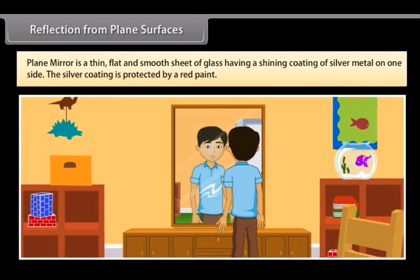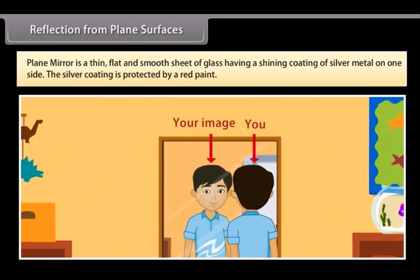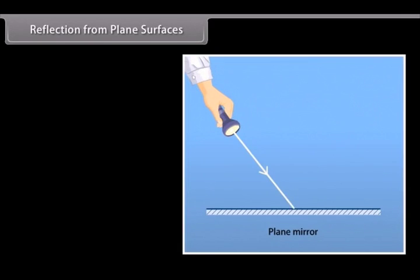Reflection from plane surfaces. A plane mirror is a thin, flat, and smooth sheet of glass having a shining coating of silver metal on one side. The silver coating is protected by red paint. Meaning of important terms are as follows to understand the figure.